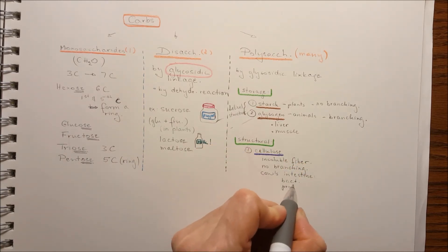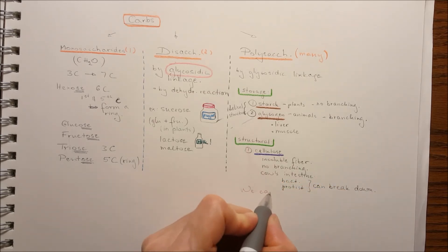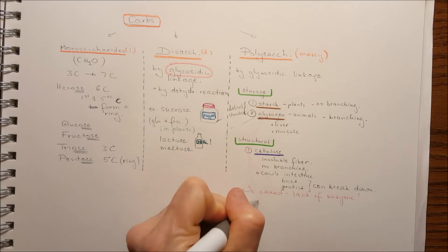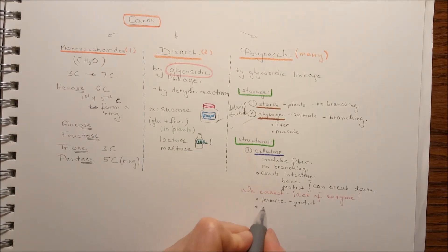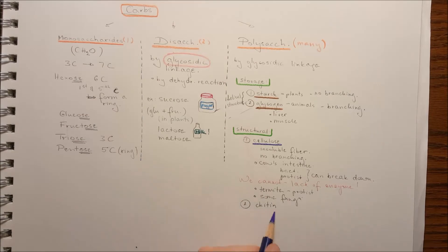In the intestine of the cows or the stomach area, they have bacteria and protease that they can break down the cellulose. We cannot because we are lack of the enzyme that breaks down the bonds. Termites cannot do it, but the protist in their guts can break down the cellulose and some fungi can break down the cellulose too.